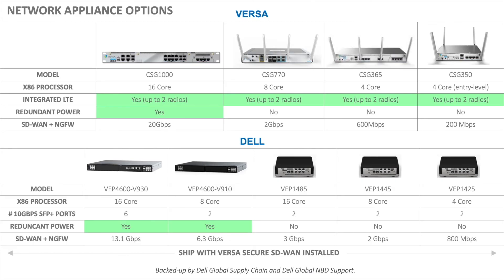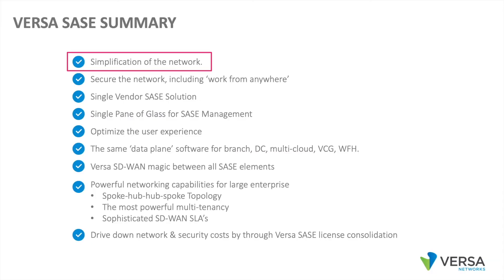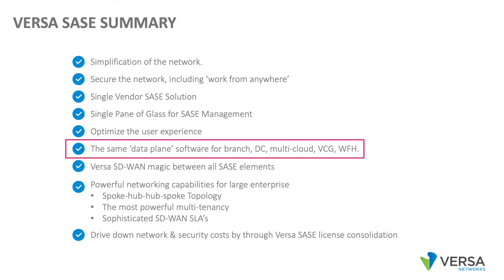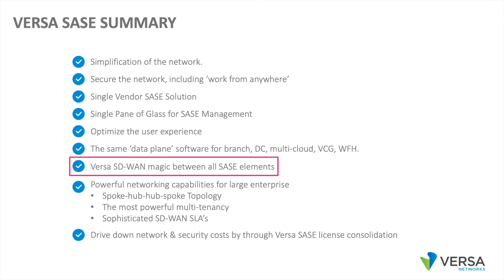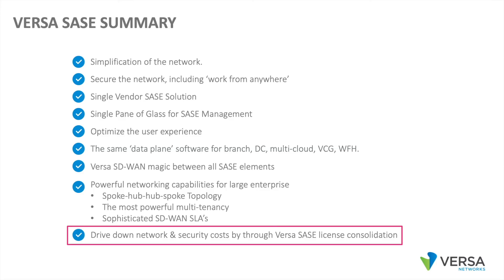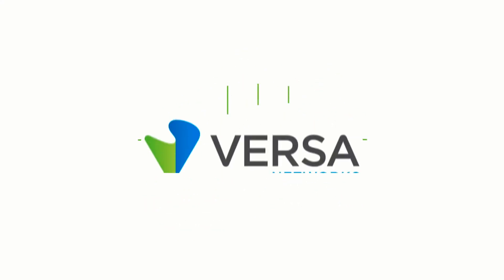In summary, Versa can simplify the network, secure the network including work from anywhere, provide a single-vendor SASE solution, and a single pane of glass for SASE management, and can optimize the user experience. It uses the same data plane software for branch, data center, multi-cloud, work from home, security, and SD-WAN. It implements Versa SD-WAN magic between all SASE elements, provides powerful networking including spoke-to-hub-to-spoke topology, the most powerful multi-tenancy, and the most sophisticated SD-WAN SLAs. We can drive down network and security costs through Versa SASE license consolidation. Thank you for joining us today.